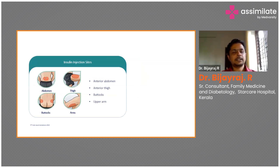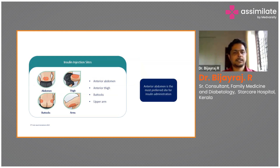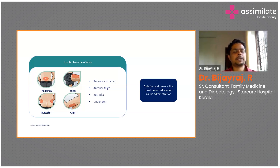The insulin injection sites are: the anterior abdominal wall — keeping two fingers around the umbilicus and pricking in all directions after a two-finger gap — the anterior and lateral aspect of the thigh, the upper outer quadrant of the buttocks, and the back of the arms or triceps. The anterior abdomen is the most preferred site for insulin administration. It moves less, blood supply is more stable, so insulin absorption will be more stable. It's very convenient for the patient, and there is a lot of space, especially since many people with diabetes are obese.